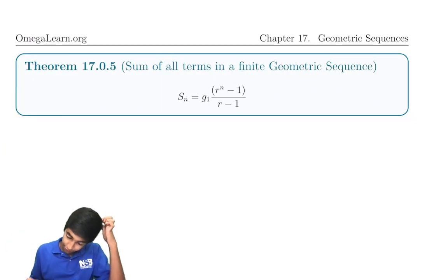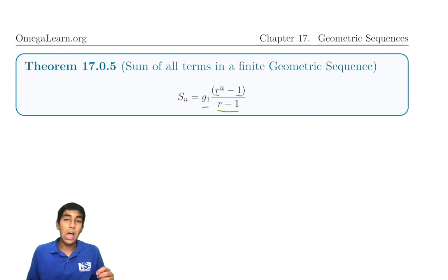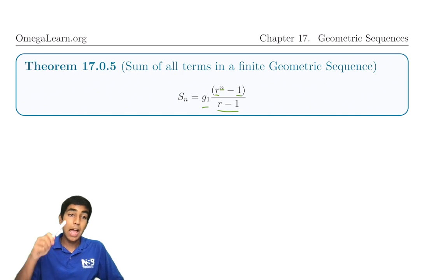The sum of all terms in a finite sequence is the first term times r to the n minus 1 over r minus 1, where n is the number of terms in the sequence. Be careful here. Not the number of times we're multiplying. The total number of terms of the sequence. That's a common error is to put n minus 1 instead.